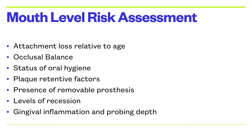Levels of recession, gingival inflammation, and probing depth will also determine how likely they are to develop further progression of periodontitis, as this is a baseline from which you can place them in a particular risk category. If the levels of recession, gingival inflammation, or probing depth seem to decrease, then you can shift them from a high risk category to moderate or low risk, but this is an area that needs to be evaluated over a period of time.